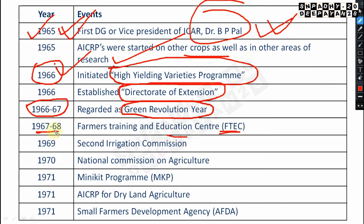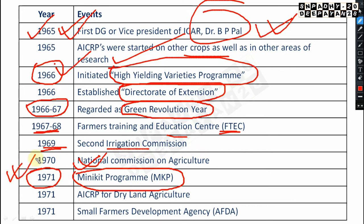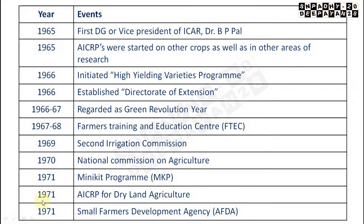In 1967 to 68, the Farmer Training and Education Center (FTEC) in Agriculture was established. In 1969, the second Irrigation Commission was formed. In 1970, the National Commission on Agriculture was set up. In 1971, the Mini Kit Program (MKP) was started. Also in 1971, the AICRP for Dryland Agriculture and the Small Farmer Development Agency (SFDA) were established.